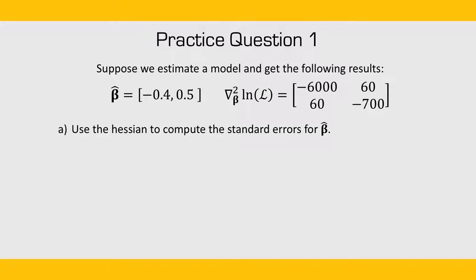use the Hessian to compute the standard errors for beta hat. And part B, use the standard errors to compute a 95% confidence interval around beta hat.